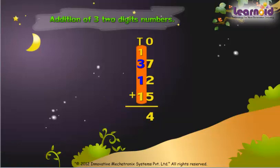Now 3 plus 1 is 4, 4 plus 1 is 5 and 5 plus 1 carry 6. Answer is 64.